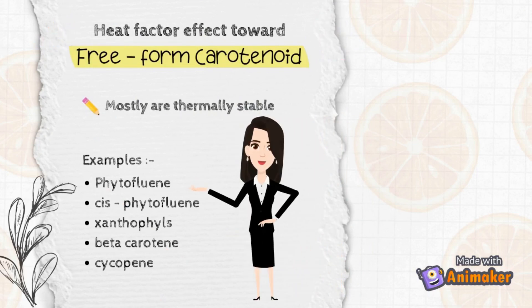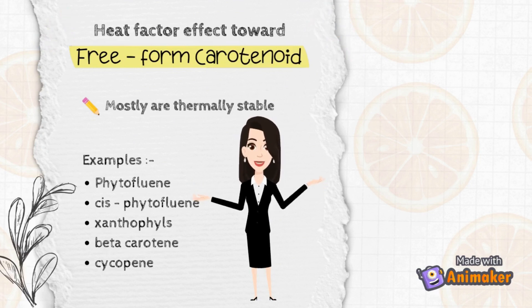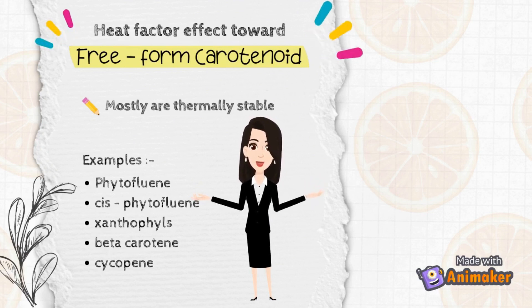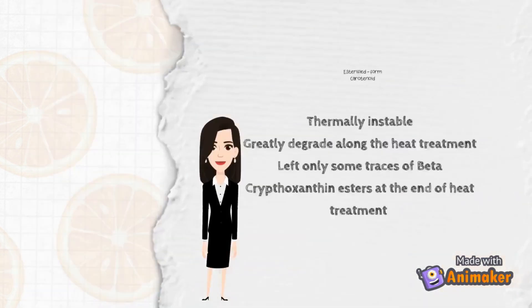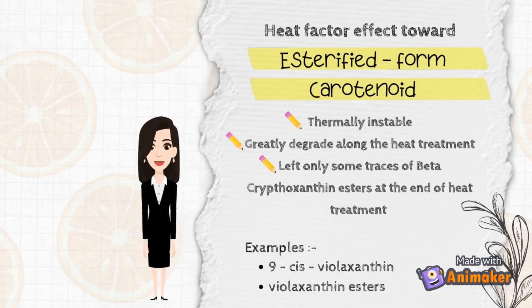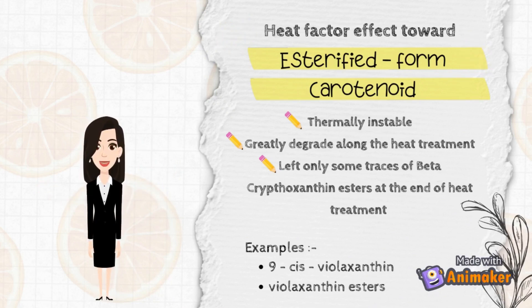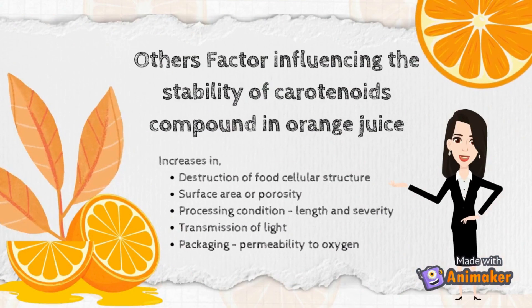Basically, due to the protection of the juice matrix, several forms of carotenoid in orange juice such as phytoene, phytofluene, cis-phytofluene, xanthophyll, beta-carotene, and lycopene in orange juice are mostly heat-resistant. On the other hand, the esterified forms of carotenoids are mostly thermally unstable. Based on an article, only a trace of beta-cryptoxanthin ester was left after heat treatment, while the other esterified forms of carotenoids were greatly degraded during heat treatment.